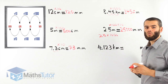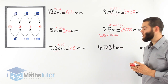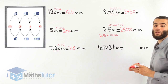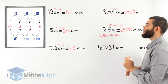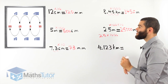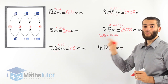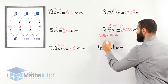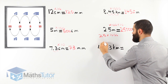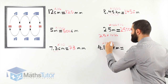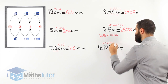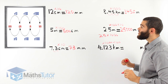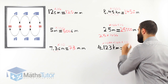Here we have 4.123 kilometres and we want to go all the way to millimetres. From kilometres all the way to millimetres — we have to go from one end all the way to the other. We'll go through metres, then centimetres, then all the way to millimetres. Kilometres to metres: times by 1,000. Then metres to centimetres: times by 100. And then centimetres to millimetres: times by 10.